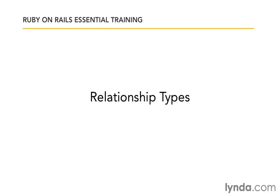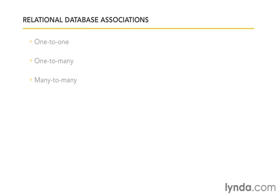In this chapter, we'll be looking at ActiveRecord's associations, and we'll start out by looking at the general types of database relationships, and then see how Rails handles each one. There are three main relational database association types: one-to-one, one-to-many, and many-to-many.